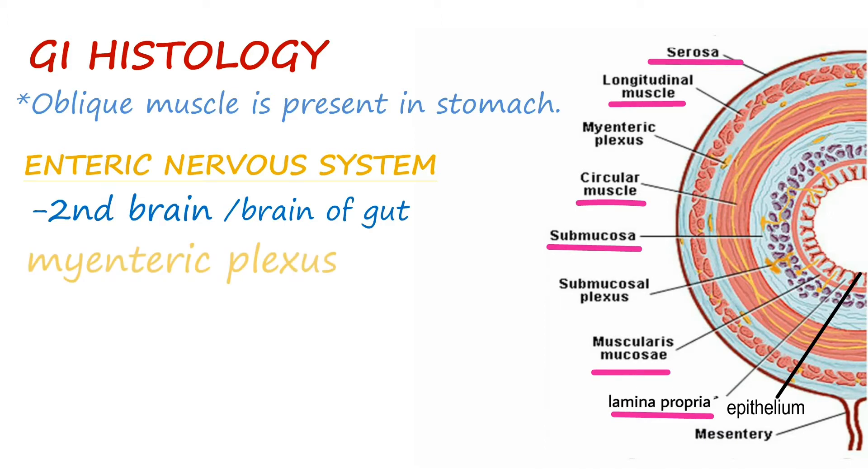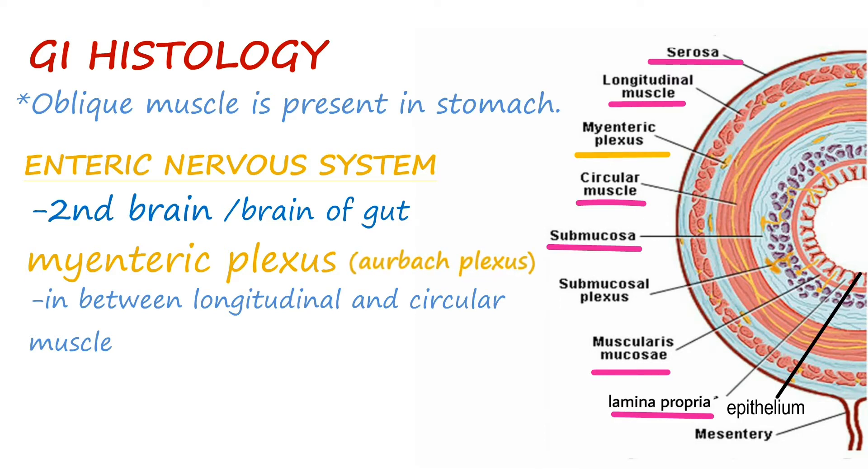myenteric plexus, lying between the two layers of muscularis externa. It is also known as Auerbach plexus. Remember it as myo meaning muscles, so lying between the two muscle layers. Meissner's plexus or submucosal plexus is another one which